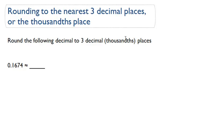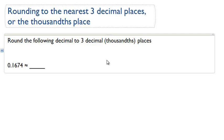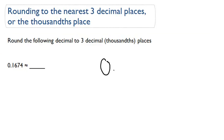All right, next is rounding to the nearest three decimal places, or the thousandth place. By now, we should know we need to write down the number and identify the place, the decimal place that we're trying to round to.